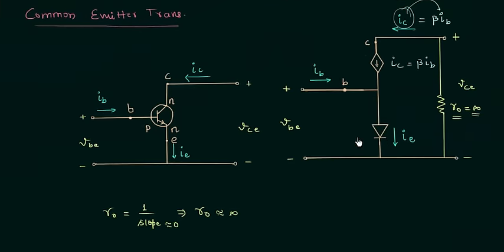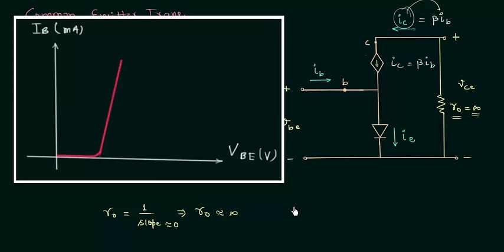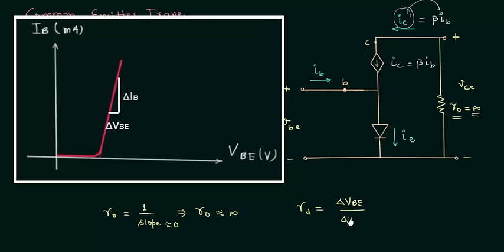The forward biased diode in the emitter branch corresponds to the input characteristics, which are similar to forward biased diode characteristics. Recall from the diode chapter that there are three types of diode resistance: DC resistance, AC resistance (also called dynamic resistance), and average AC resistance. Since we are doing AC analysis, we will use the AC or dynamic resistance.